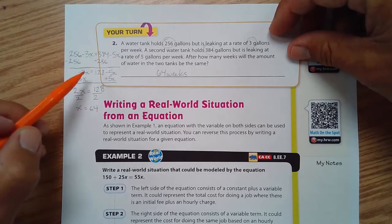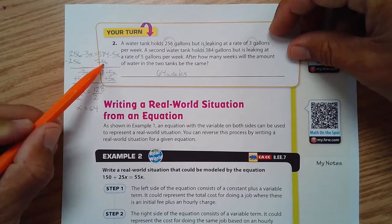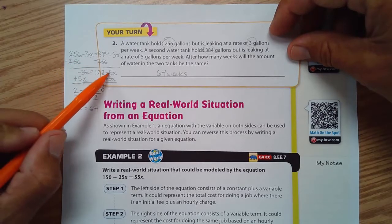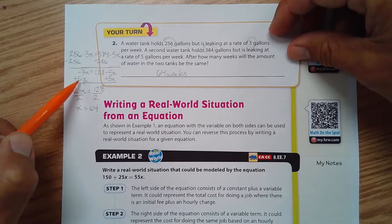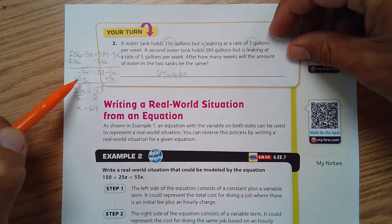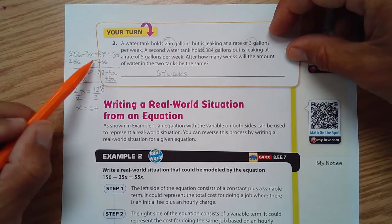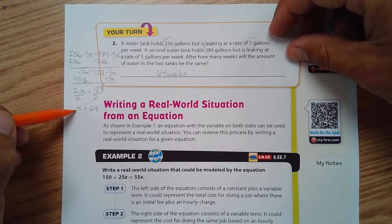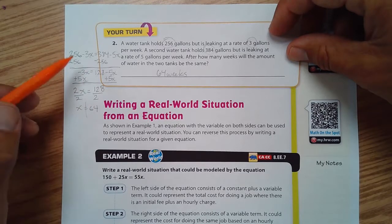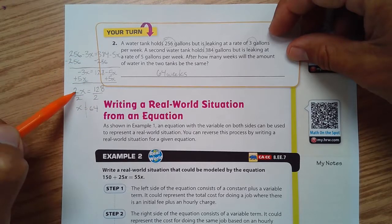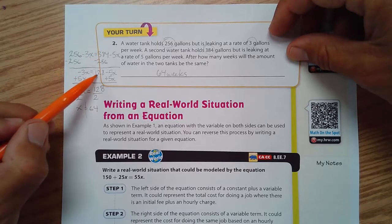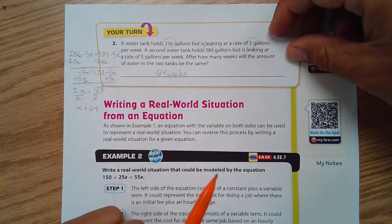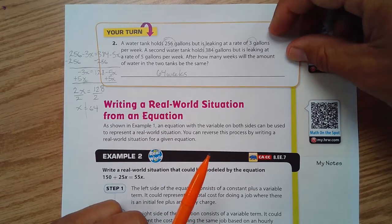What I decided to do is I didn't collect the variable terms on one side quite yet—I subtracted 256 from both sides, but I probably should have added 5x first. As long as you're getting the constants on one side and the variable terms on the other, that's what really matters. I added 5x, this ends up being 2x, I subtracted 256 and got 128. So 2x equals 128, divided by 2 means 64 weeks is when the water in the two tanks will be the same.